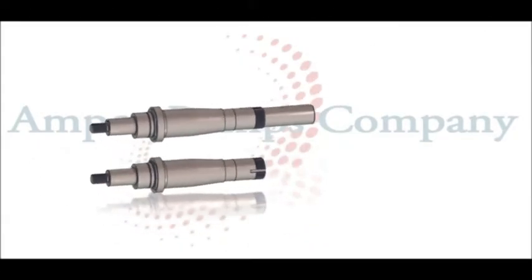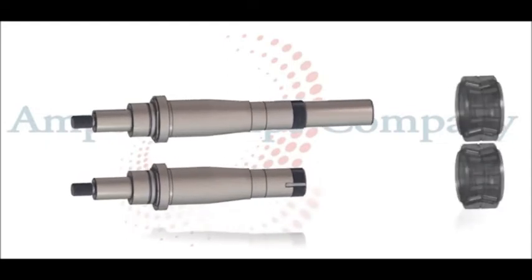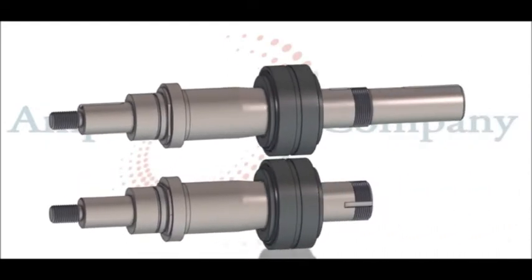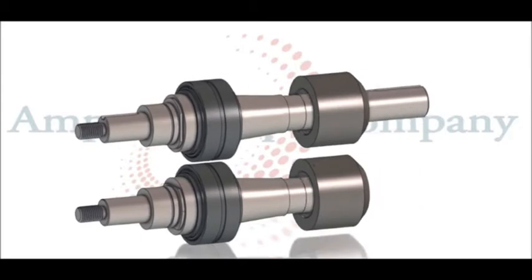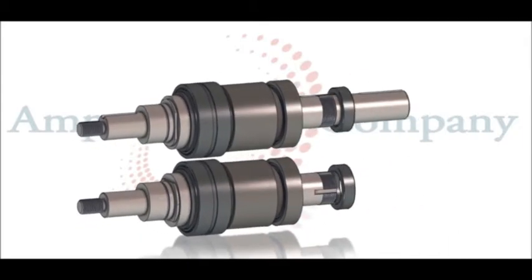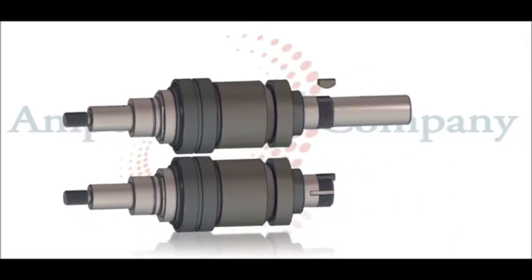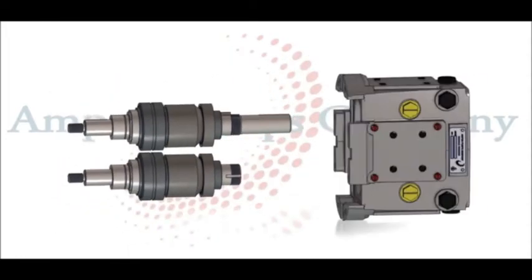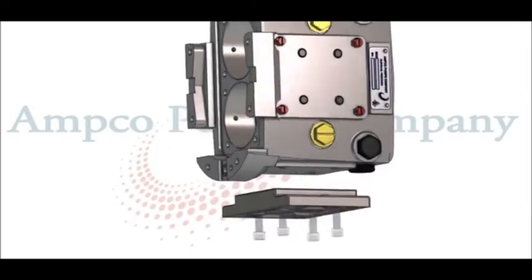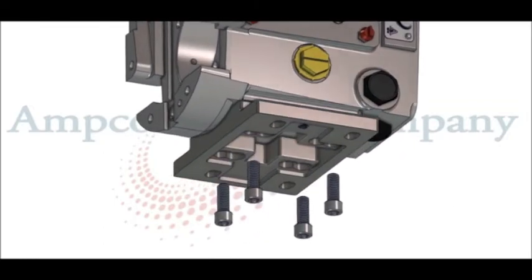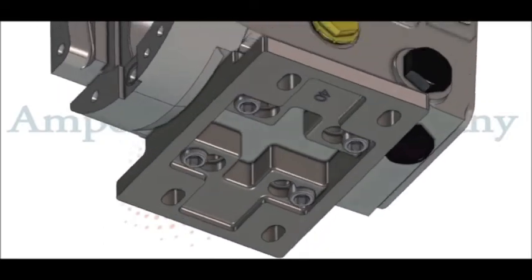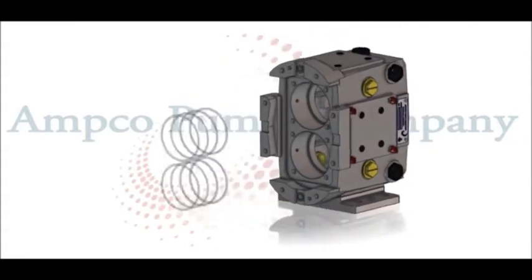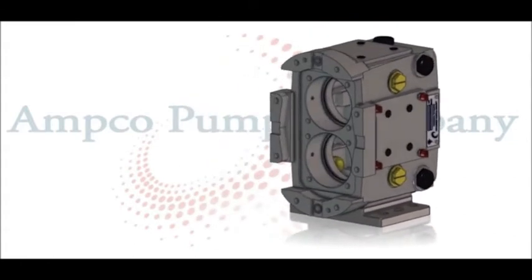The ZP3 pumps include 17-4 PH stainless steel shafts, stainless steel bearing retainers, helical gears, and sealed clean-out plugs. A forged stainless steel gear case is standard on all ZP3, ZP1, and ZP2 model pumps.